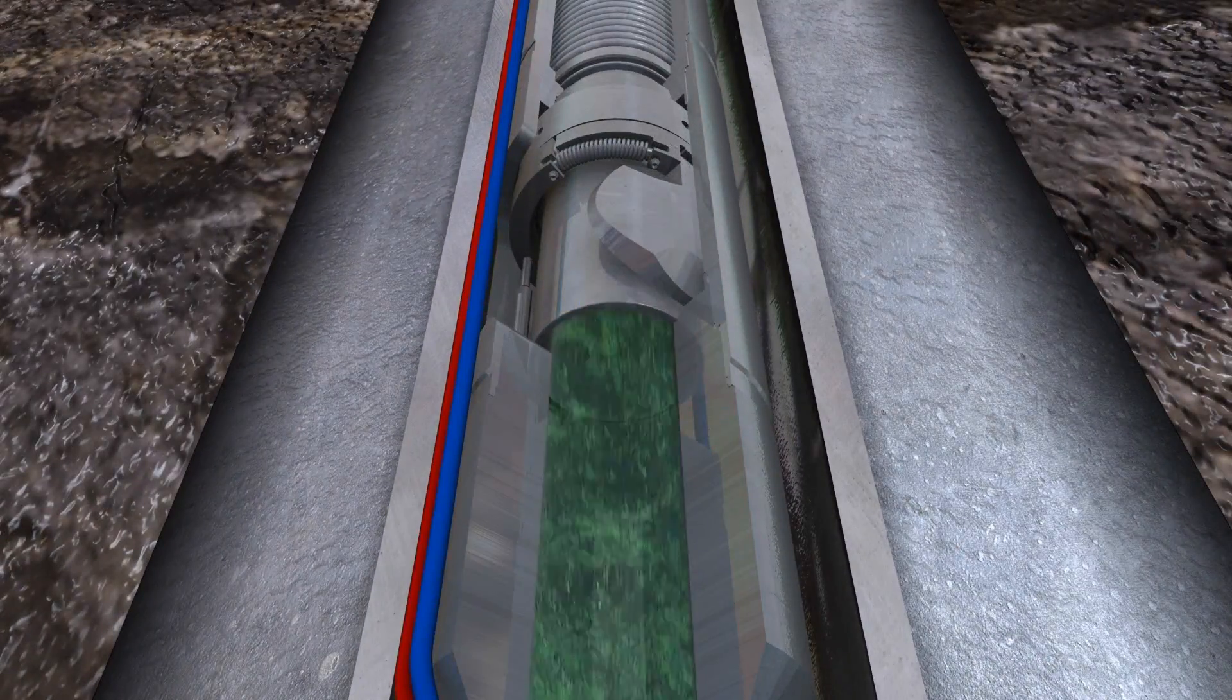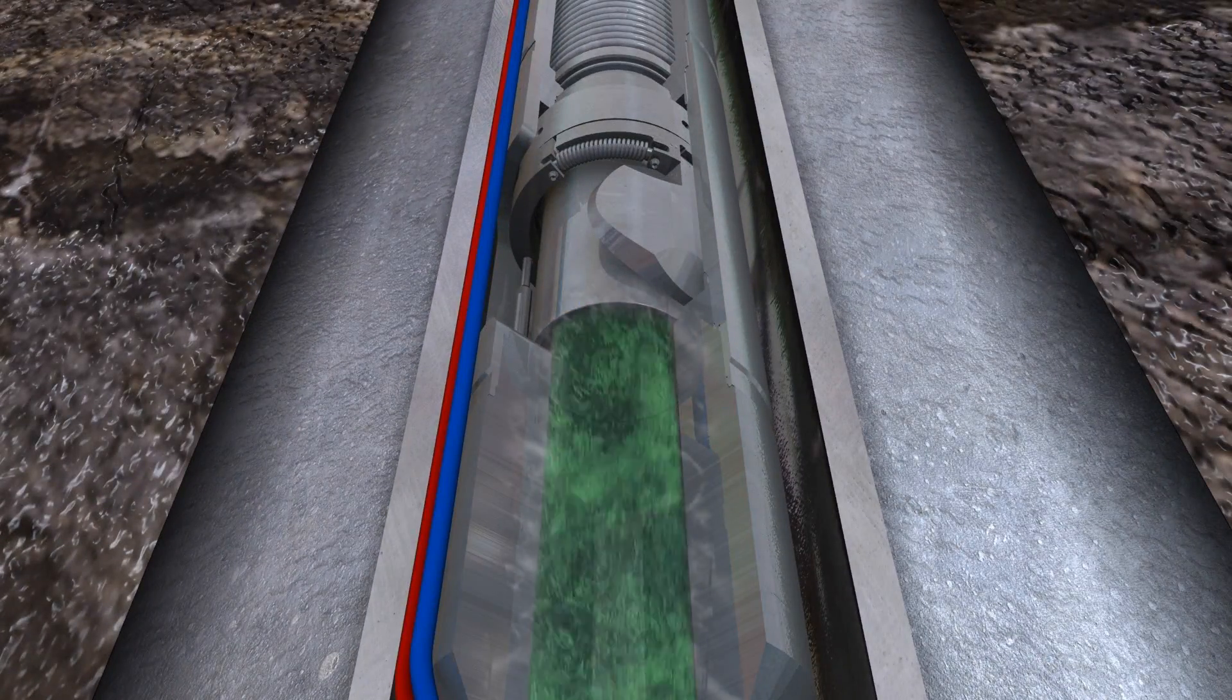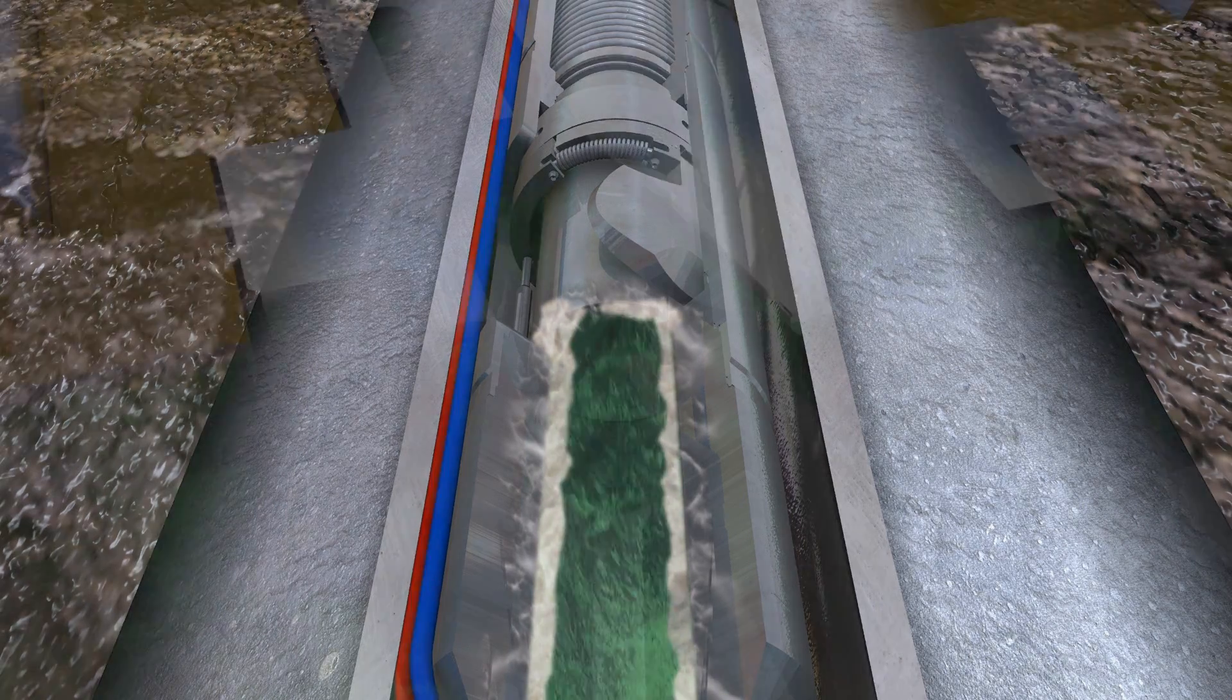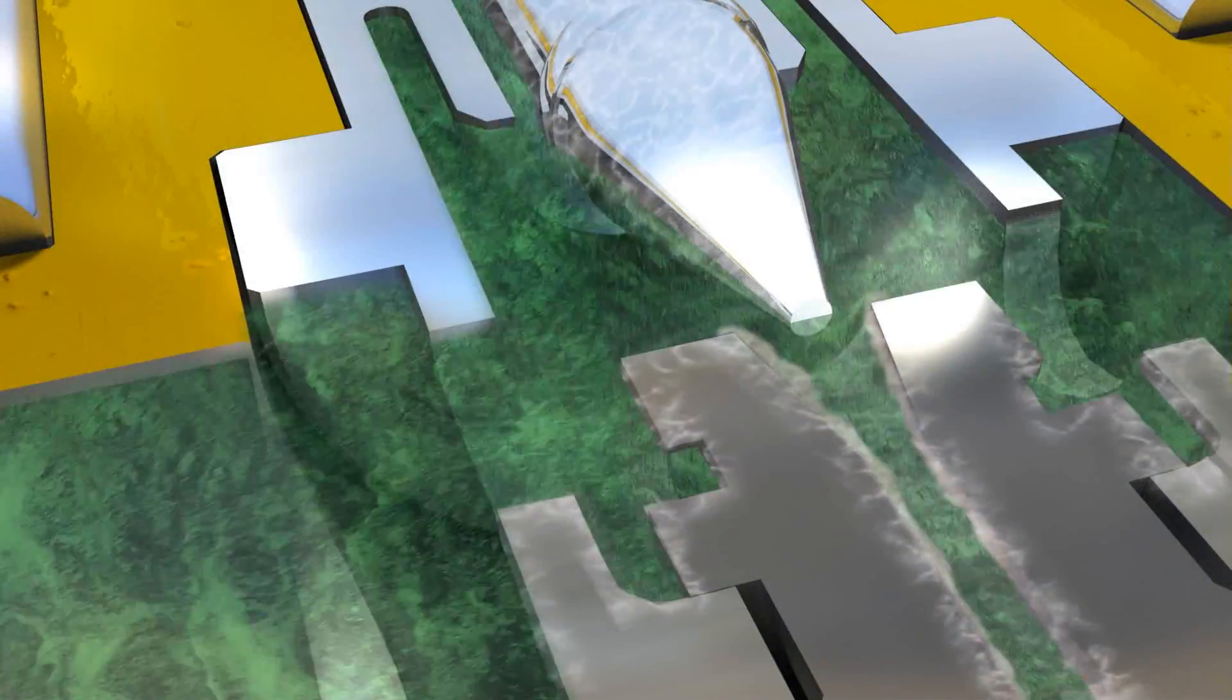Formation water, which was stable under reservoir conditions, can become unstable when the pressure or temperature changes. For example, pressure drops across the subsea safety valve or choke.